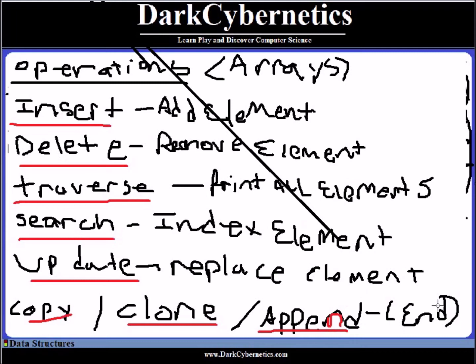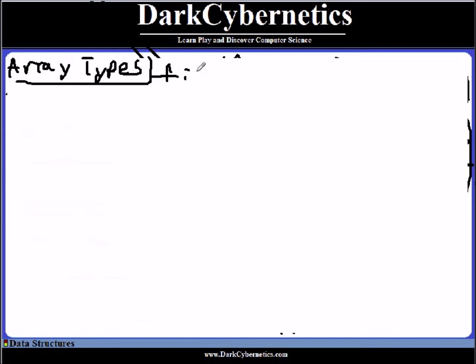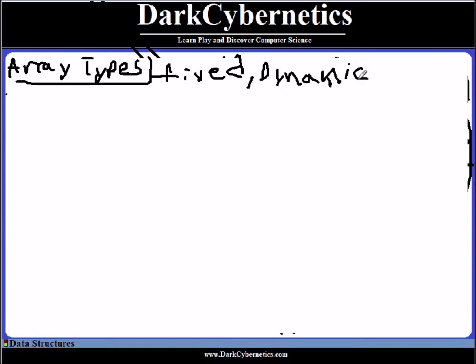The array data structure has different types. There are different types of arrays. We have a fixed size array, where the length is predefined — suppose the length was five. If we wanted to make the array resizable, it would be called a dynamic array. Some programming languages allow you to create dynamic arrays, but not all languages are the same.